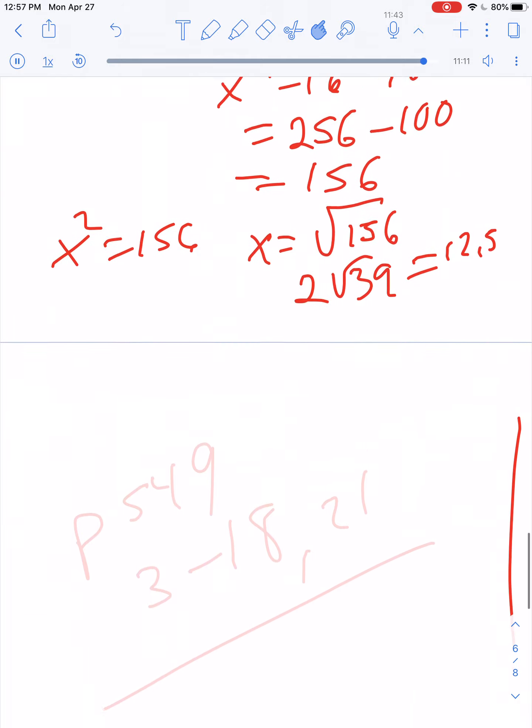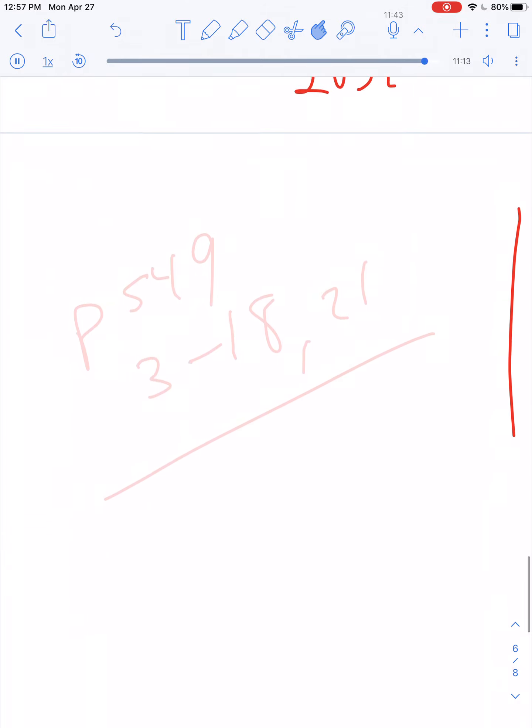Now, after watching this, please go to the book, and it's already in Canvas. I want you to do page 549 in the textbook, numbers 3 through 18, and number 21. That will be due on Friday, and so you have the quiz on Delta Math. You have this due by Friday, and that is it for this week. If you have questions, I have daily office hours at 3 o'clock. Feel free to chime in and ask a question at any time between 3 and 3:45. Take care.